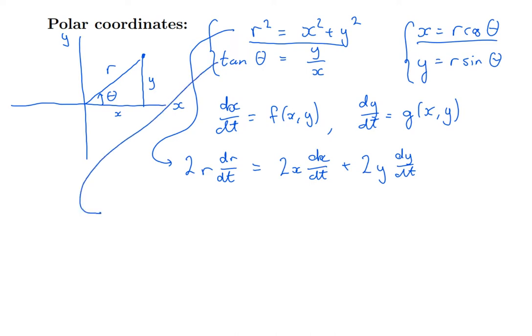What about the second one? Well, I remember that the derivative of tan is sec squared times the derivative of the argument. What about the derivative of y over x? I'm going to use the quotient rule. Bottom times the derivative of the top minus the top times the derivative of the bottom, all divided by the bottom squared.